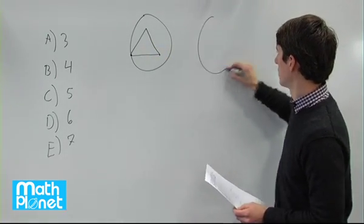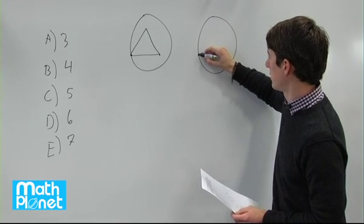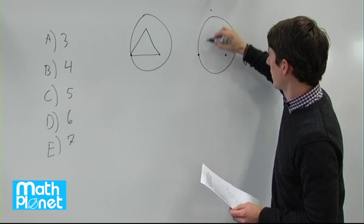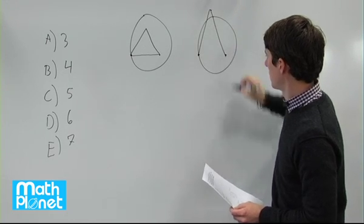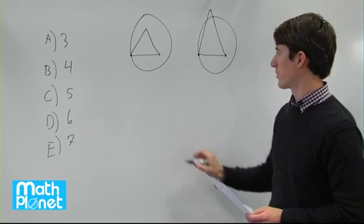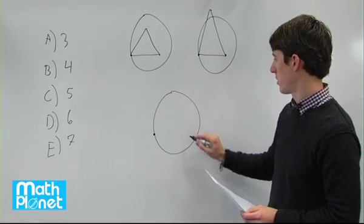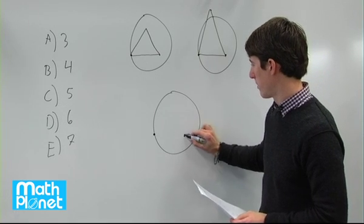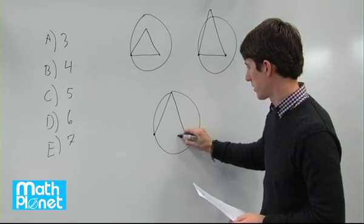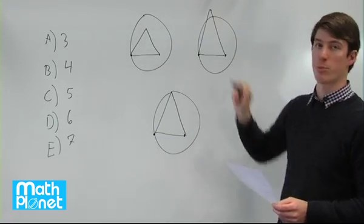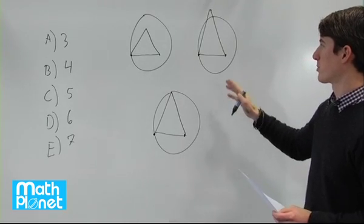We can have a triangle inside where one touches, one doesn't, and then it has a peak outside. Or we can have a triangle where again one touches, one is on the inside, but one just touches like this one does because we're given no information about this point here. So these are our three options.